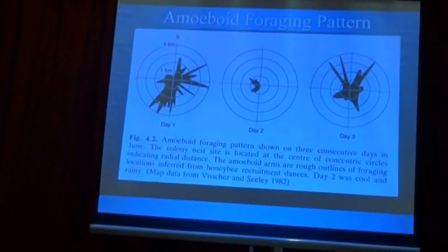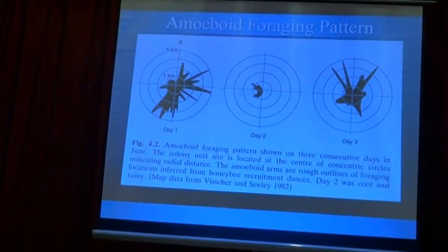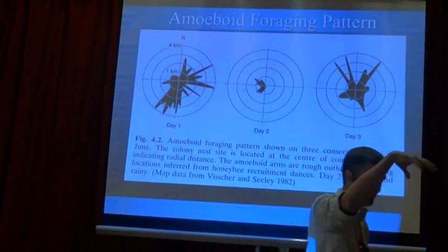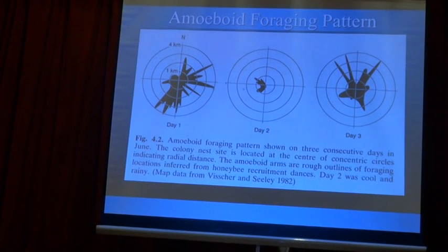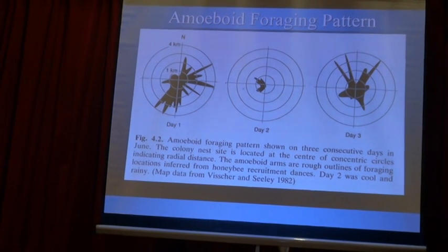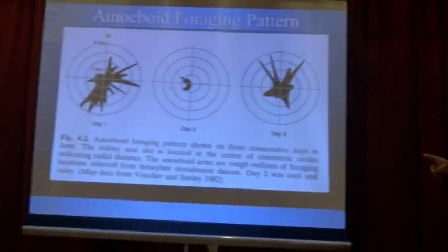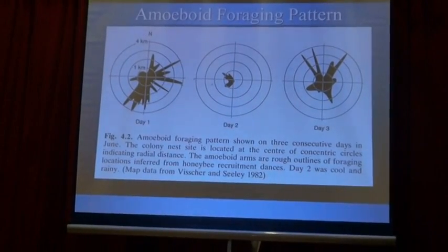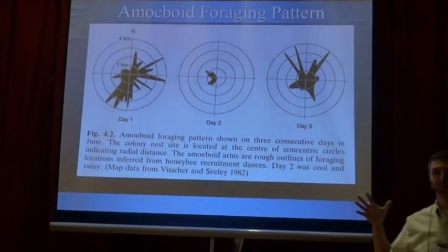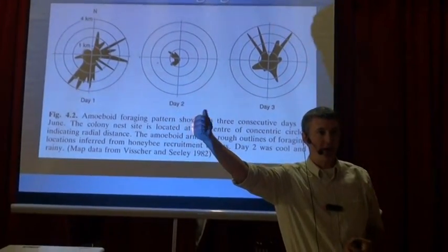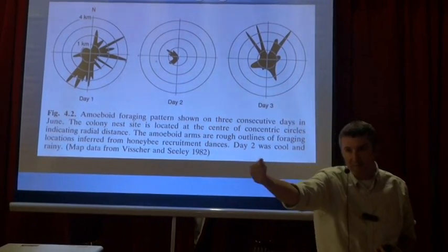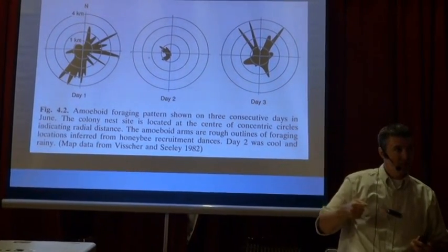So let's talk more specifically about this. Social insect colonies — these superorganisms — are said to have amoeboid-like foraging patterns. Tom Seeley did a research project years ago. Imagine yourself hovering above your honeybee colony and mapping out the foraging route of each bee that leaves the nest. On day one, you can see the colony's foraging pattern on the left, and what you'll notice is that there are groups of bees reaching out to one area, exploiting it fully.